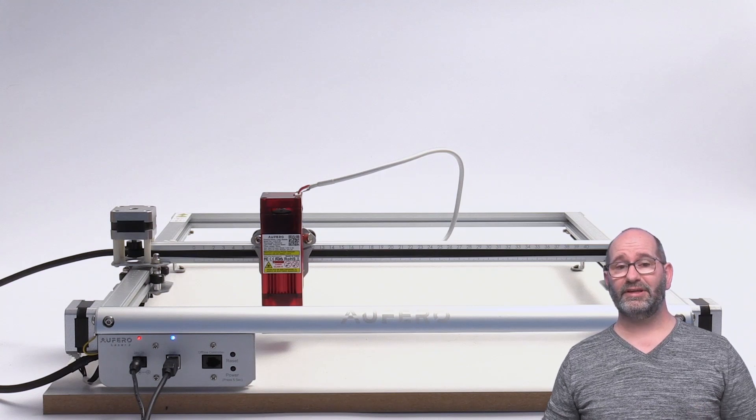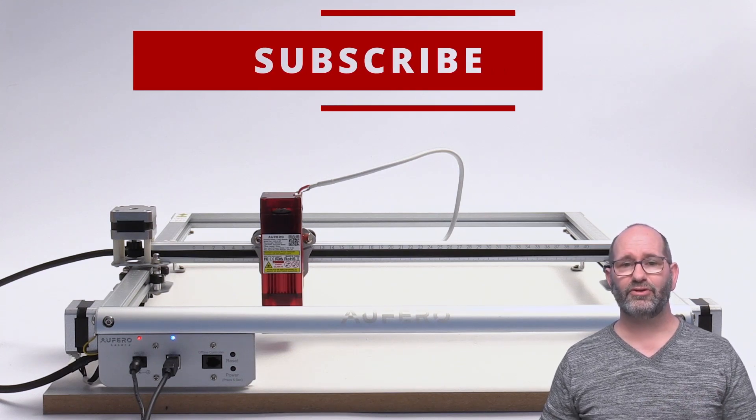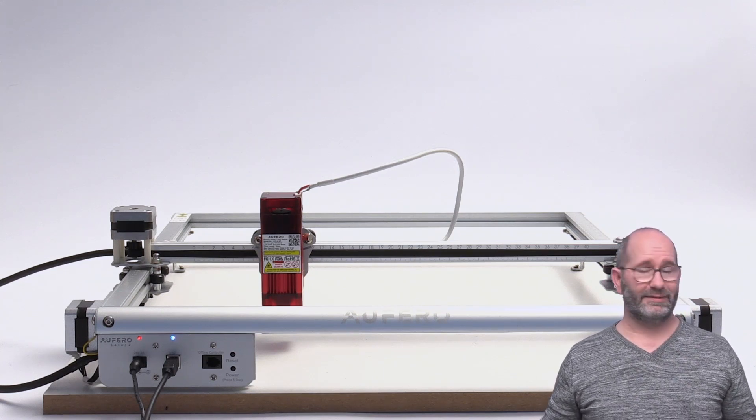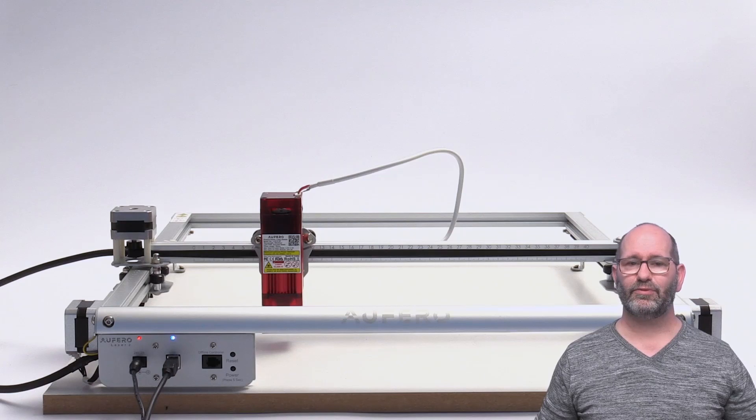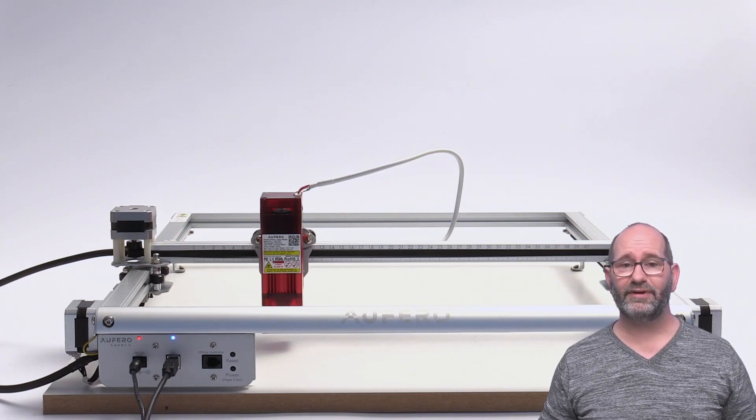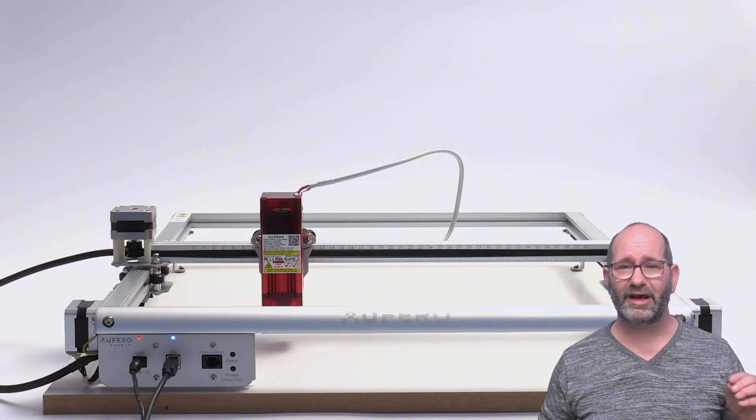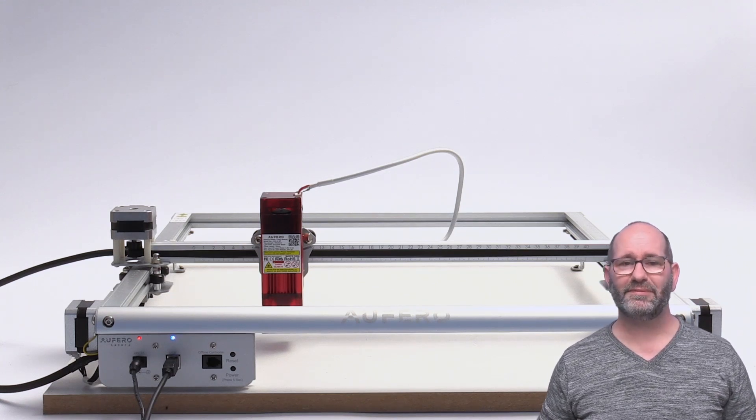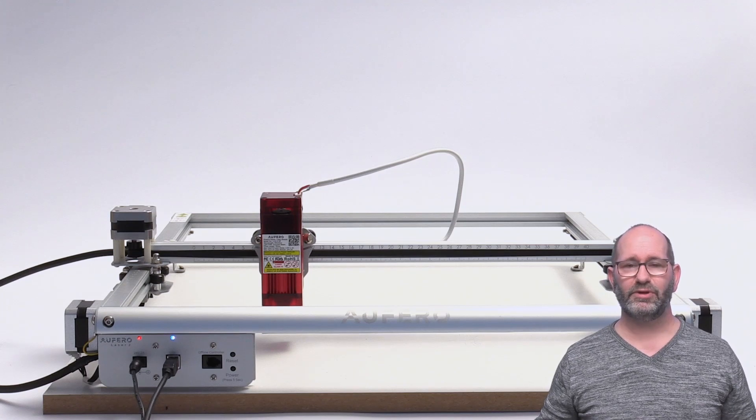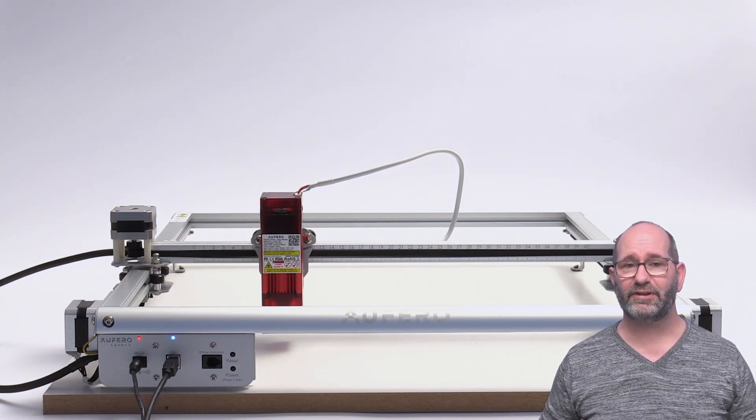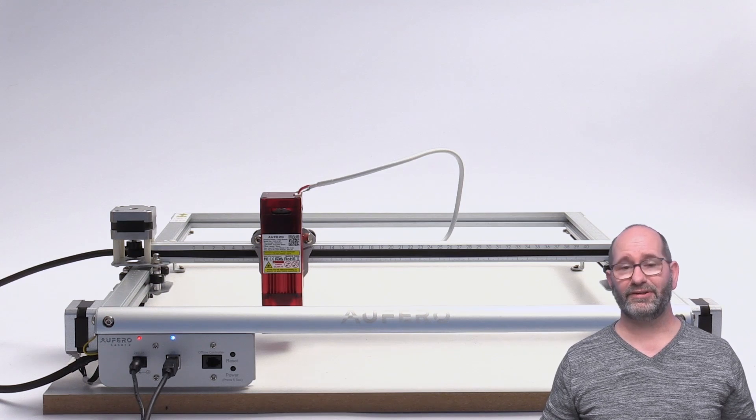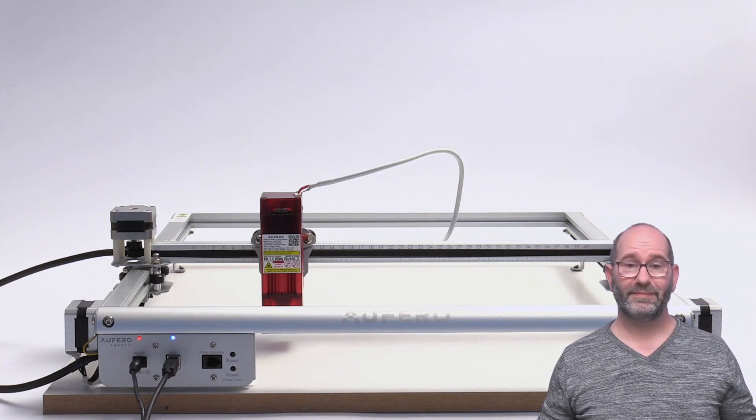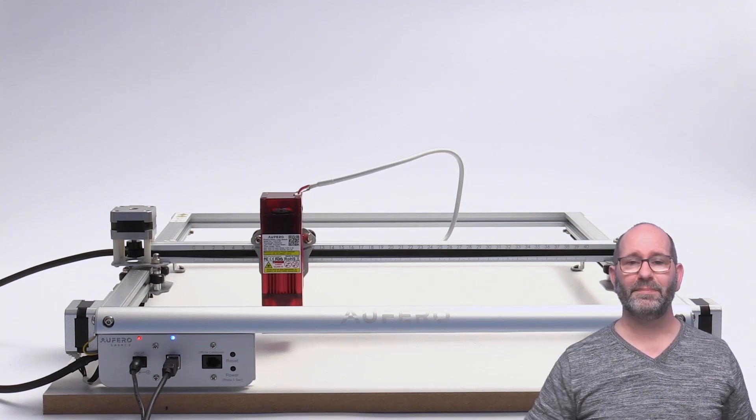So, if you want to see that, please make sure you are subscribed to the channel. Make sure you like this video. And well, then we will try that out in the next one. But, for now, the Aufero Laser 2 is capable of running at 15,000 mm per minute, which is incredible, and which is 50% faster than the fastest laser that was on the market until this one arrived. So, that's it. See you next time. Bye-bye.